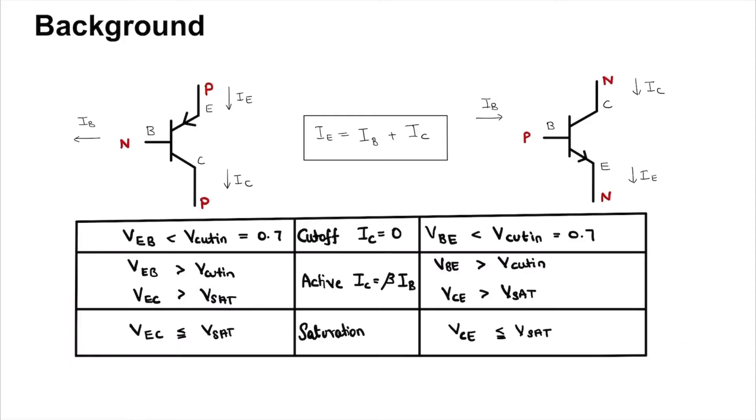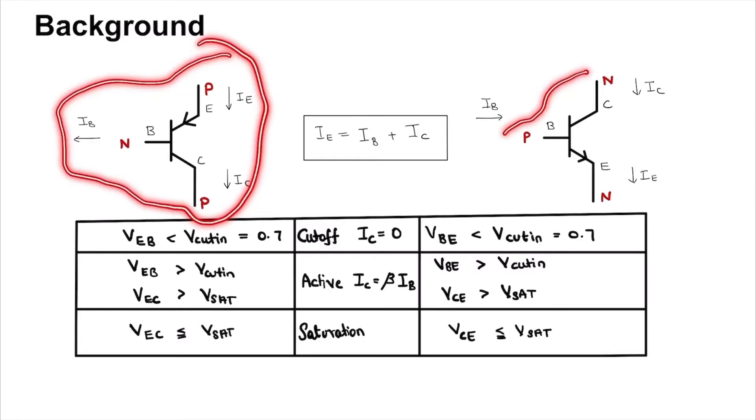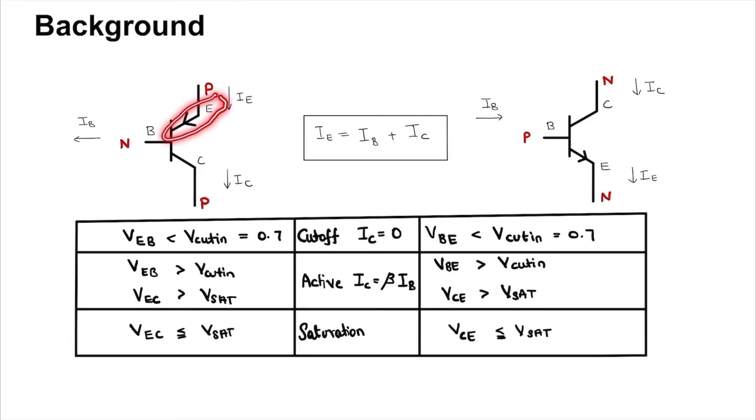A little bit of background on the BJT. This is a PNP BJT and this is an NPN BJT. The emitter is the terminal that is marked by the arrow. The other two terminals are base and collector.